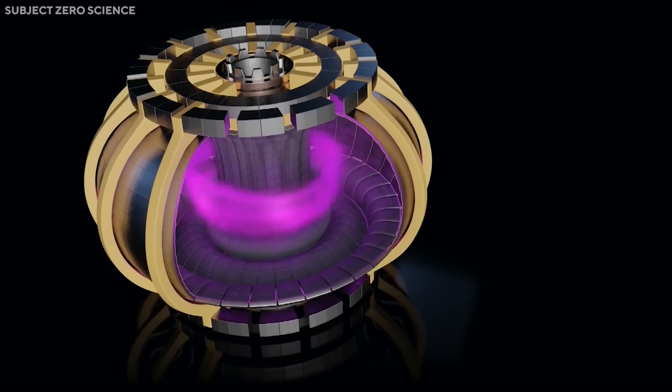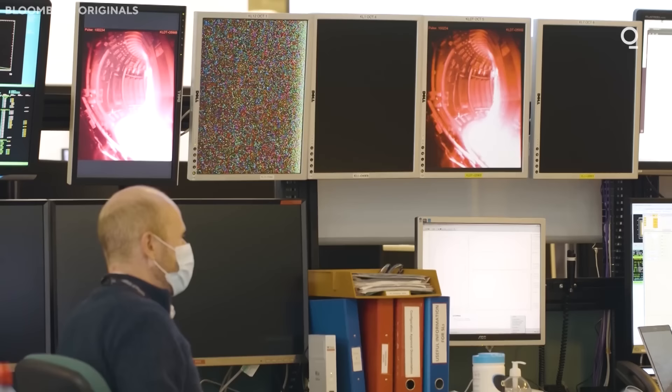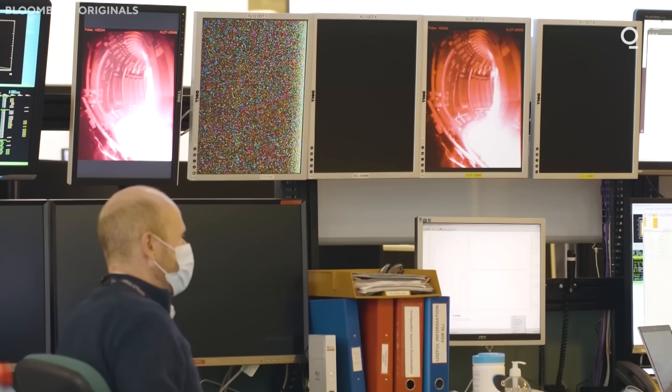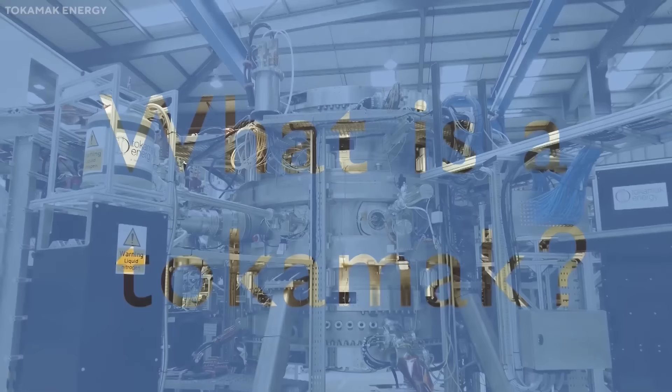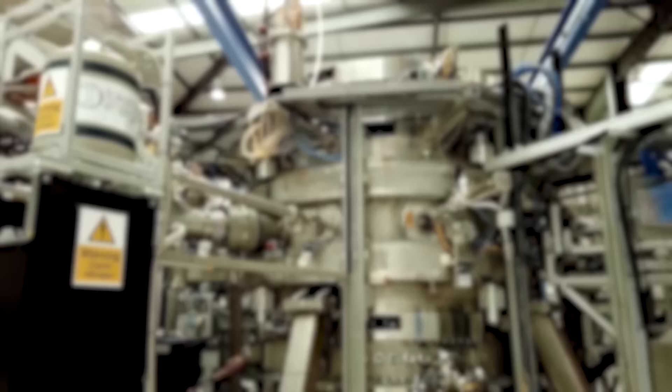Magnetic confinement uses strong magnetic fields to confine and shape the fusion plasma, preventing it from touching the walls of the reactor. The magnetic fields also help to heat and compress the plasma, increasing the chances of fusion. The most popular and advanced design for magnetic confinement is the tokamak.